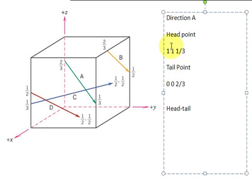So the head point minus the tail point: 1 minus 0 is 1, 1 minus 0 is 1, one third minus two thirds is minus one third.